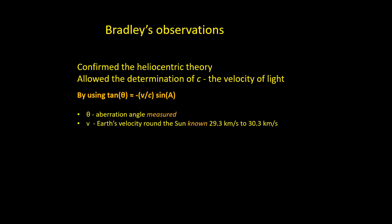V is the Earth's velocity around the Sun, and that was known to Bradley. It varies between 29.3 km per second in July and 30.3 km per second in January, when the Earth is closest to the Sun. A is the angle between the star and the Earth's direction of motion. Again, that was known.